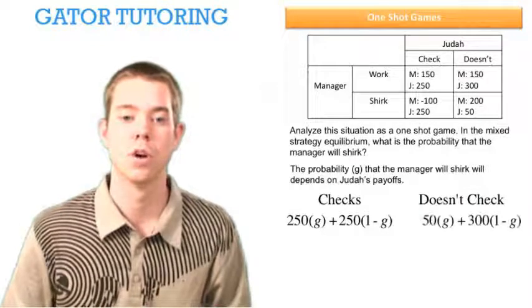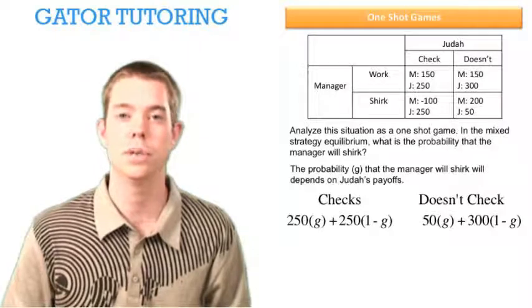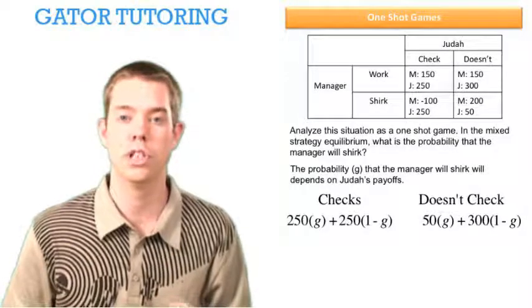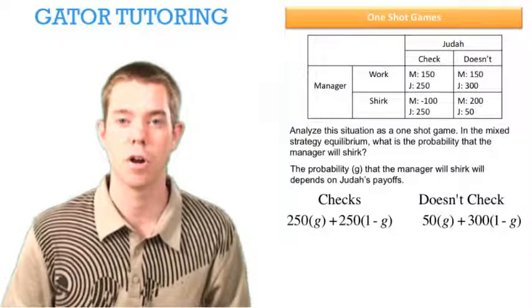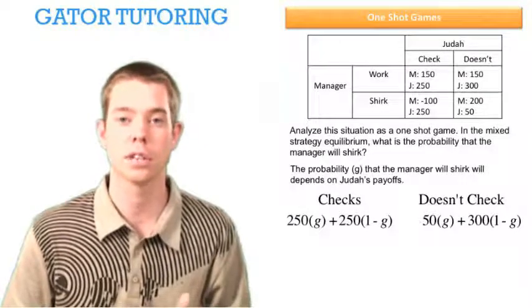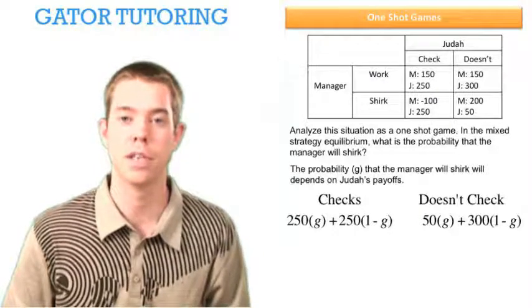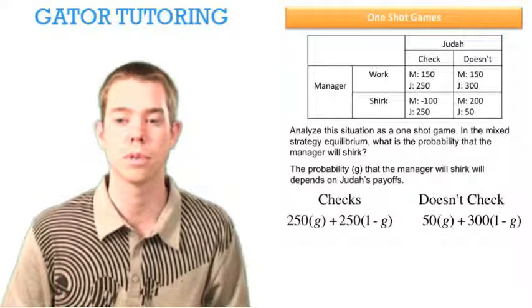If he doesn't check, well, there's some chance that he's going to make only $50. G was the probability that the manager is actually shirking. So when G happens, Judah only makes $50. 1 minus G is the probability that the manager is working, is not shirking. So 1 minus G is paired with $300 for Judah because when he doesn't check up on the manager and he was working hard, Judah expects to make $300.